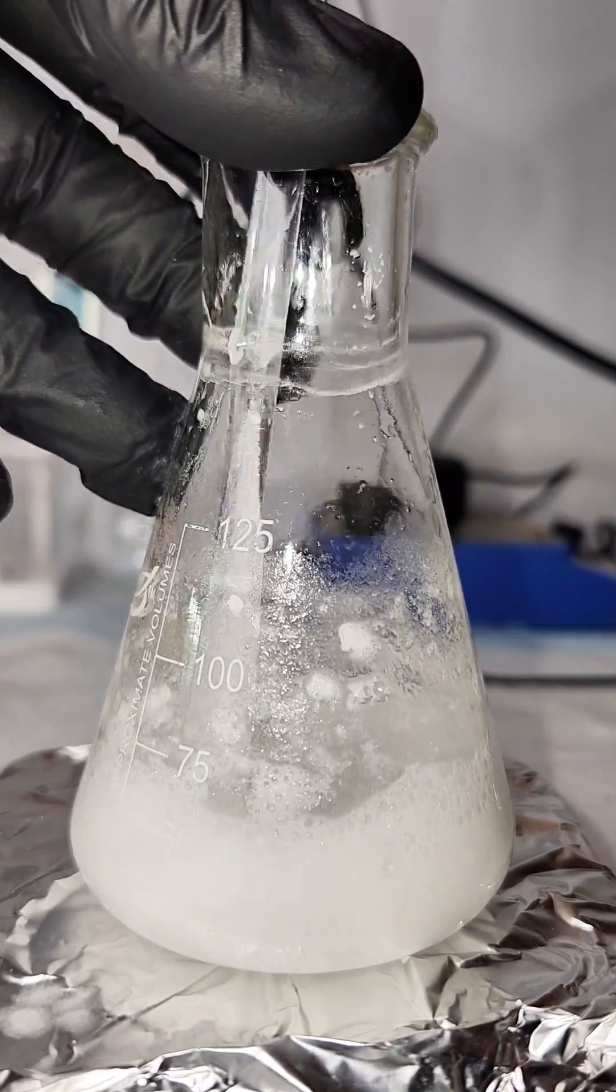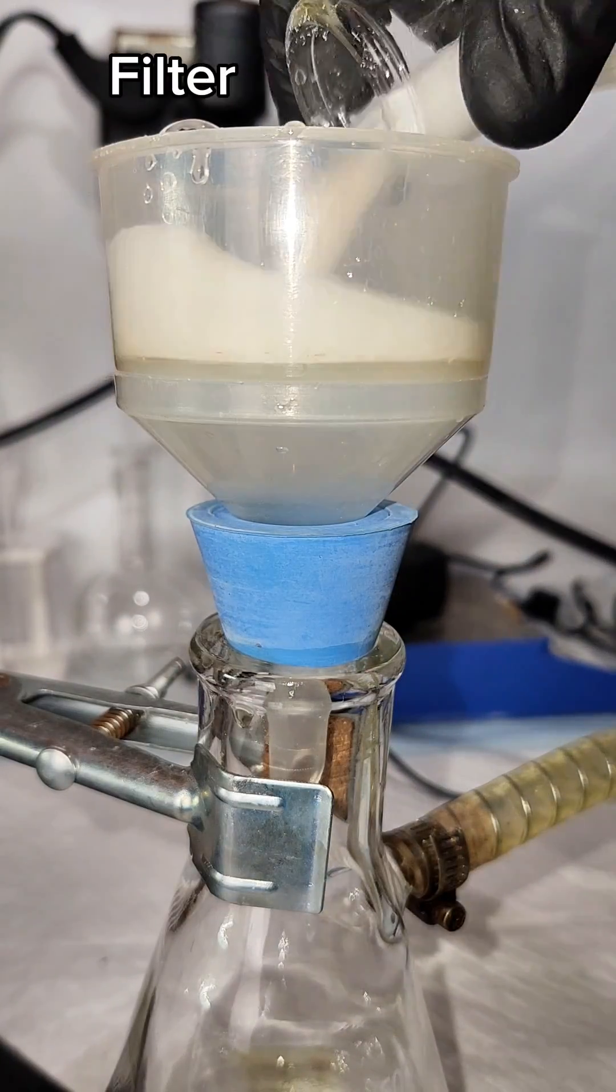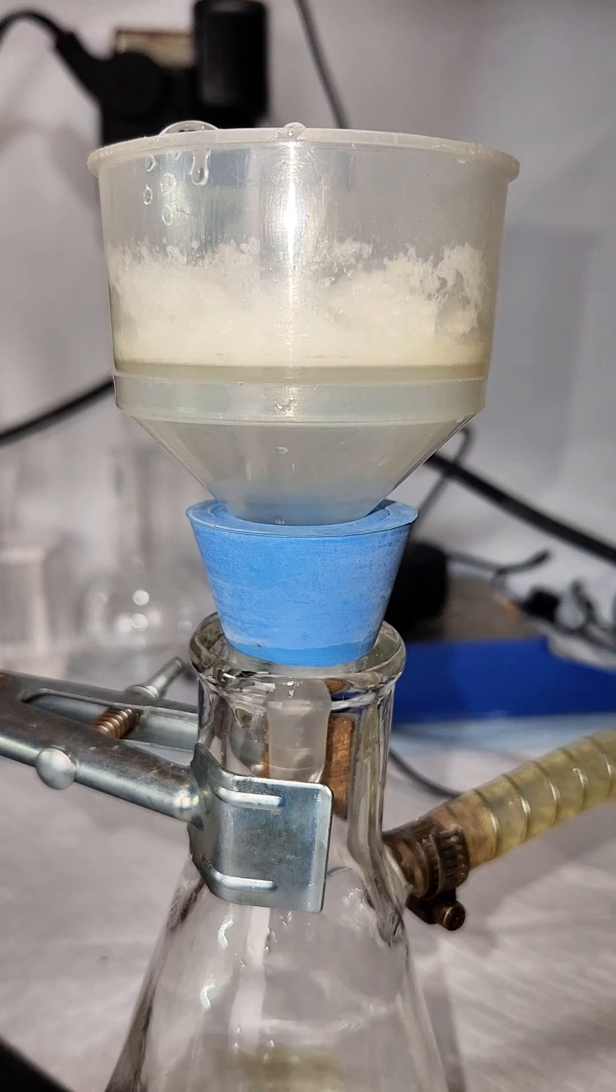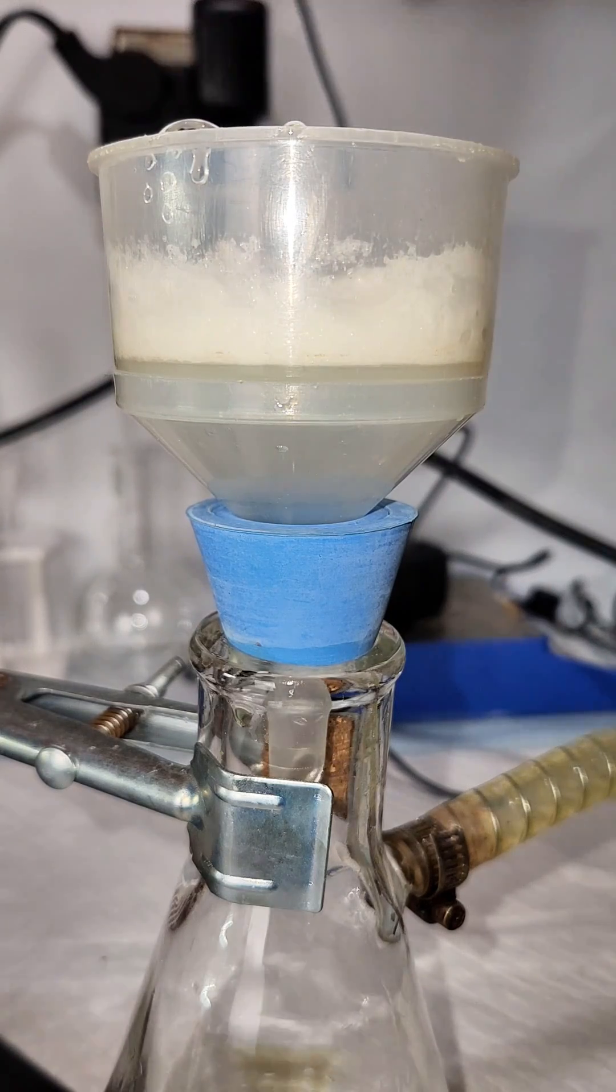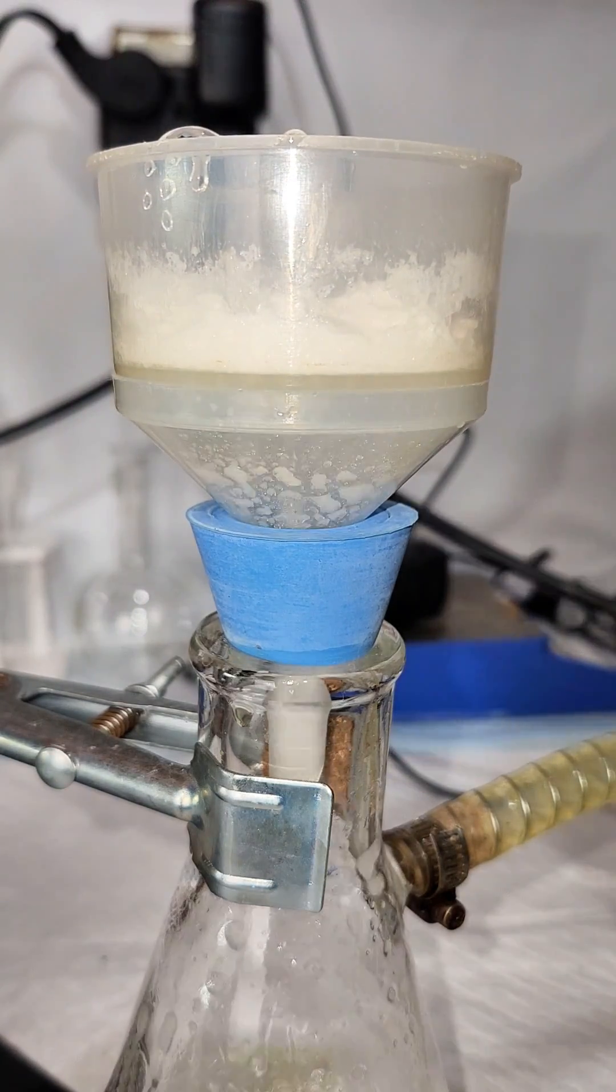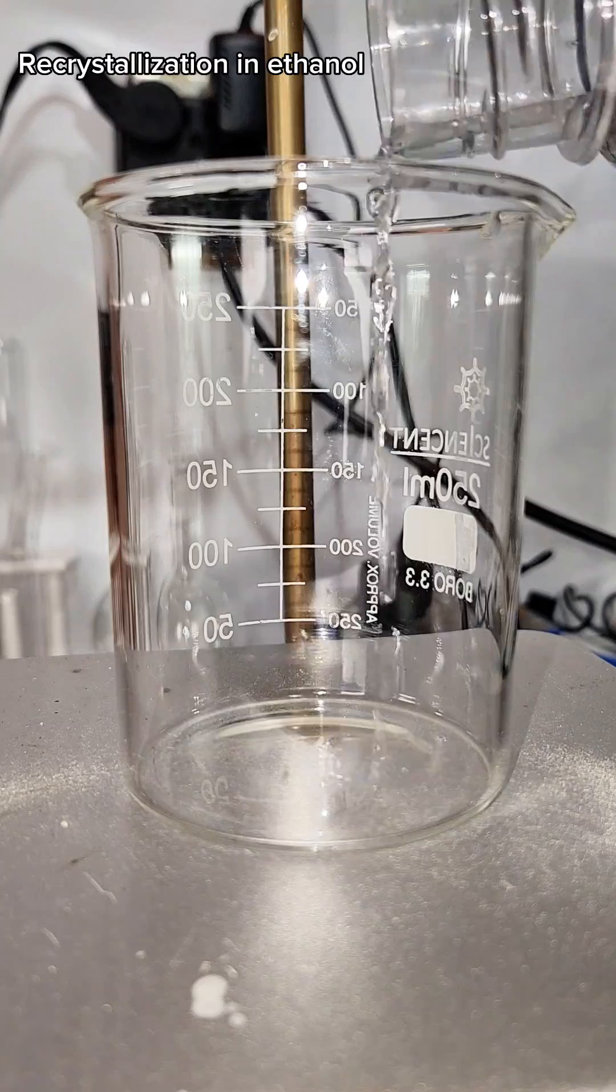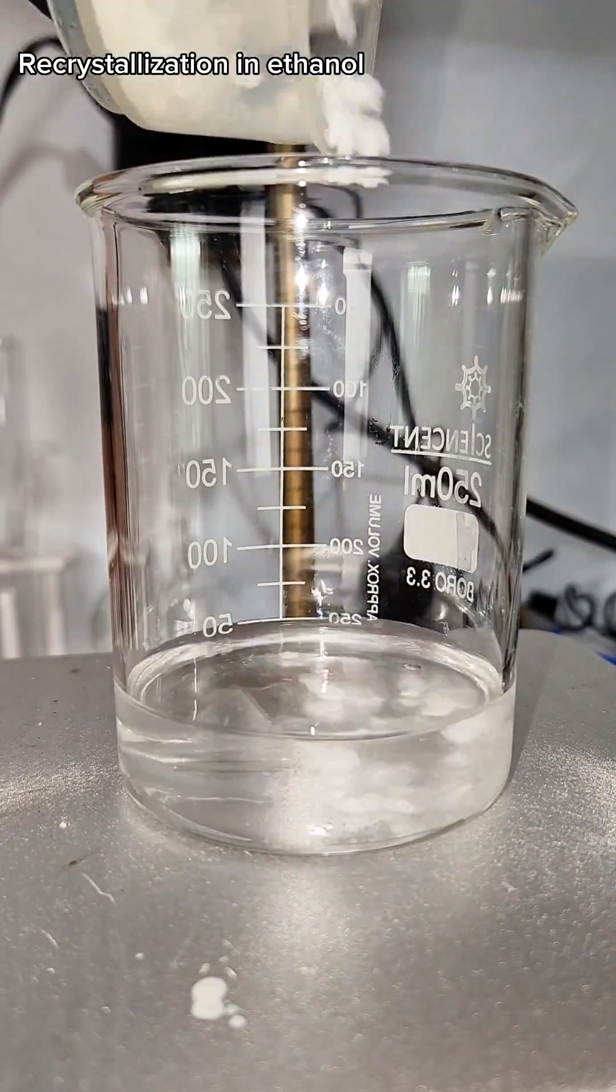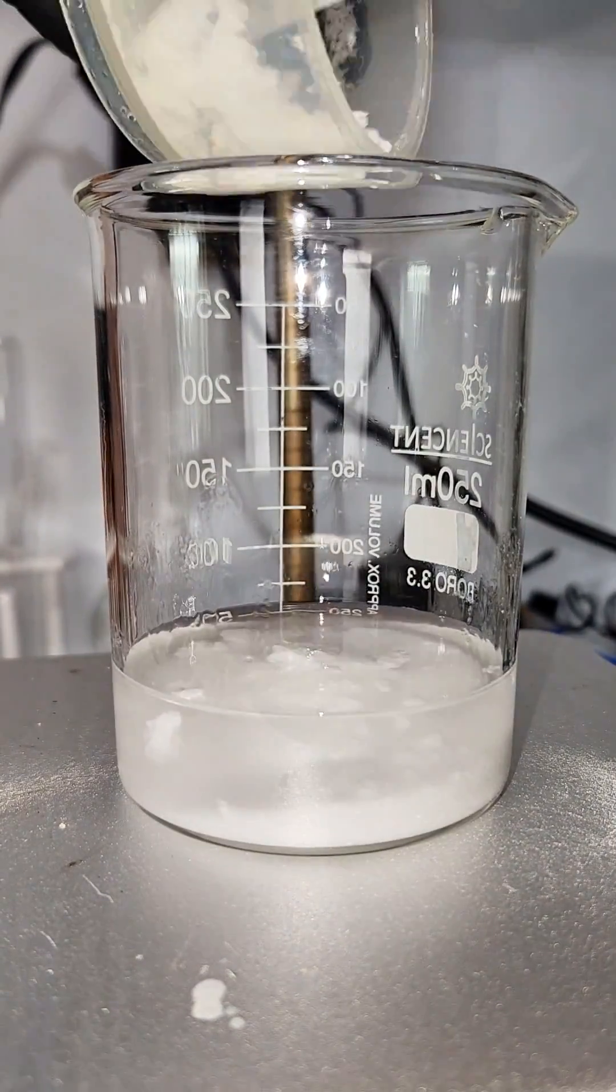I used a small excess of urea to make sure that all the phthalic anhydride reacted to phthalamide, which means I'm going to have a slight urea contamination here. Urea is extremely soluble in water, so a water rinse should be fine, but I want pretty crystals, so I'm going to do a recrystallization in ethanol.